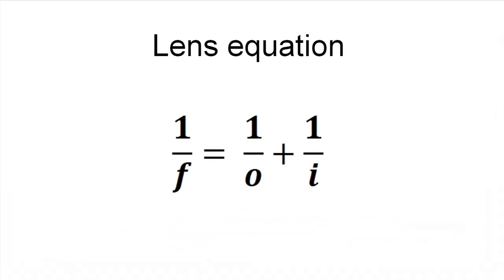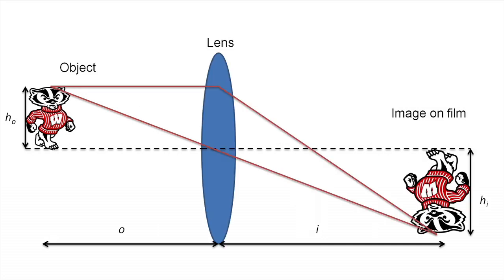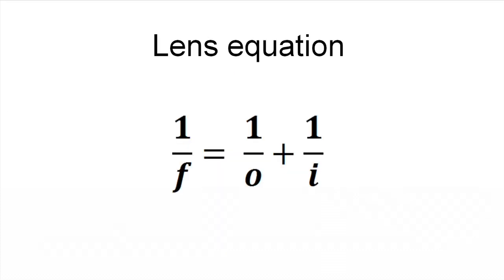When you change the focus on the camera you are changing the image distance, the distance from the lens to the image sensor, while leaving the focal length the same. This is done by moving the lens relative to the sensor. If the image distance is changed but the focal length is not, this has the same effect as changing the object distance.